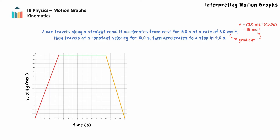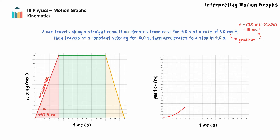To draw the corresponding position-time graph, we need to calculate the car's displacement for each segment. In the first 5 seconds the car accelerates — the car's displacement can be calculated by the area under the velocity-time graph during the first 5 seconds, which is positive 37.5 meters. The position-time graph will be an upward curve that gets steeper with time. The first segment of the car's journey on the position-time graph extends from 0 meters at 0 seconds to 37.5 meters at 5 seconds.